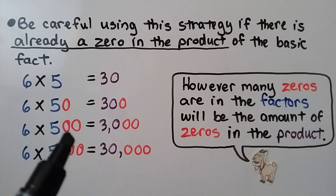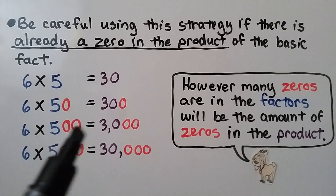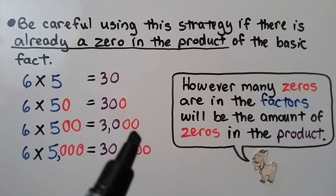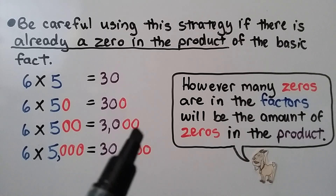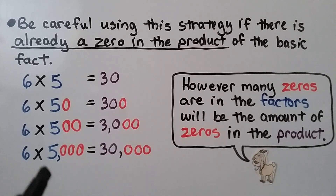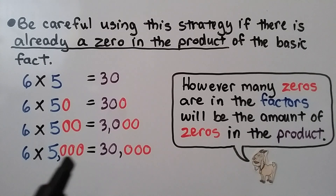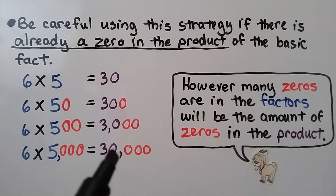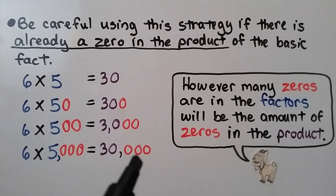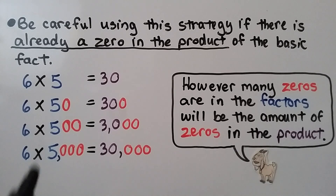We're looking at how many zeros are in the factors. For 6 times 500, we have two zeros, so we add two zeros to the 30 and get 3,000. For 6 times 5,000, we have three zeros, so the 30 has three zeros after it. Be very careful if there's already a zero in the product — we're looking for how many zeros are in the factors.